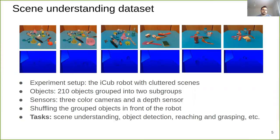The third data set is a scene understanding data set. We construct this data set by putting 10 objects in front of the robot, then we randomly shuffle them, and after each shuffling we record depth and color images.